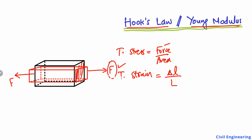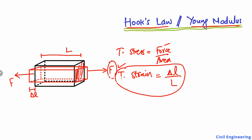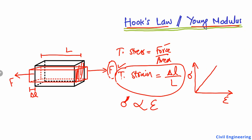The change in length — the extension — divided by the original length L gives you the tensile strain created inside this object. Now, Hooke's Law states that when stress, represented by sigma, is directly proportional to the strain, this is a Hooke's Law region. If we plot stress on the y-axis and strain on the x-axis, there is a straight-line region where stress is directly proportional to strain. This straight line shows the Hooke's Law region where Hooke's Law is applicable.